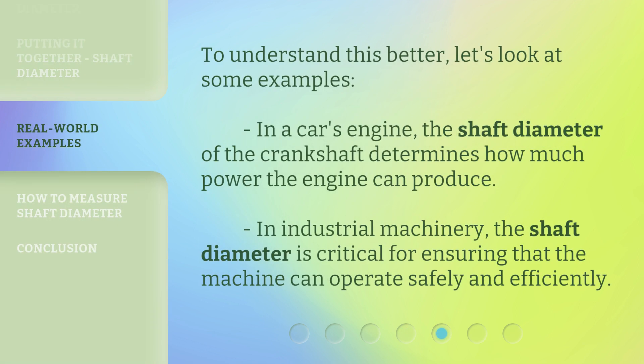To understand this better, let's look at some examples. In a car's engine, the shaft diameter of the crankshaft determines how much power the engine can produce. In industrial machinery, the shaft diameter is critical for ensuring that the machine can operate safely and efficiently.